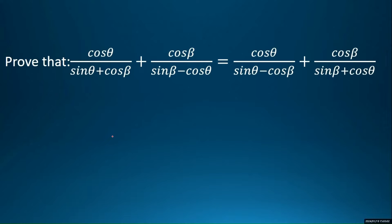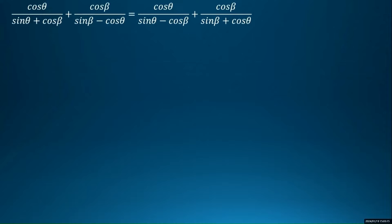Firstly, in this video, let's solve this trigonometric identity. The identity is: cos θ / (sin θ + cos θ) + cos θ / (sin θ − cos θ) = cos θ / (sin θ − cos θ) + cos θ / (sin θ + cos θ).